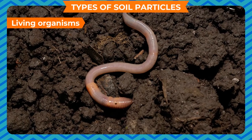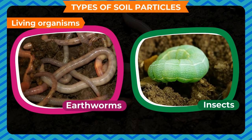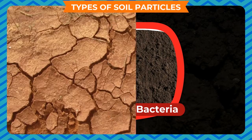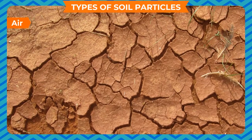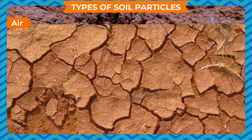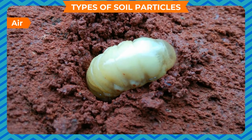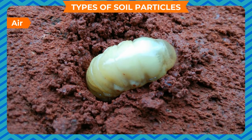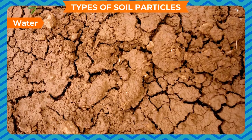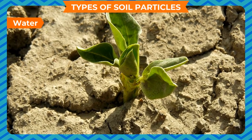Living organisms: Many living organisms like earthworms, insects, bacteria, etc. live in the soil. Air: The gaps between the soil particles are filled with air, which living organisms use for respiration. Water: Water is present between the soil particles, which allows plants to grow.